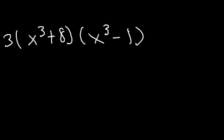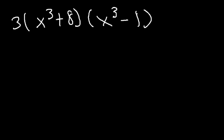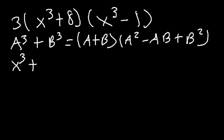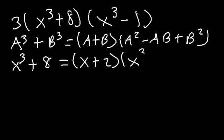There are two other special cases: the sum of perfect cubes and the difference of cubes. The sum of cubes formula is a cubed plus b cubed equals a plus b times a squared minus ab plus b squared. For x cubed plus 8, a is x and b is 2, so it factors as x plus 2 times x squared minus 2x plus 4.